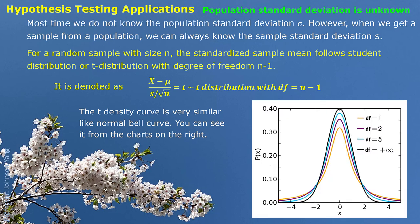The t-density curve is pretty much like a bell-shaped normal curve. Here we show a few examples with degrees of freedom 1, 2, 5, and infinity.